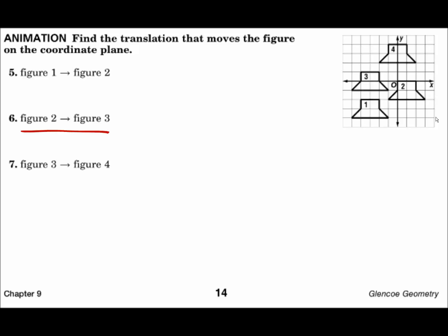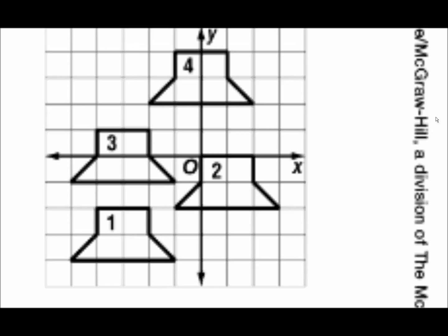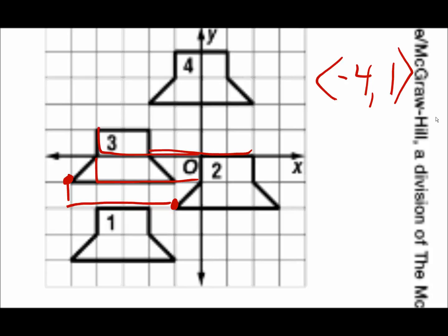From figure 2 to figure 3 — same job. Pick a point on figure 2 and move it to the corresponding point on figure 3. I'll choose the bottom left point. Go left or right first: I go 4 to the left, that's negative 4. Then I go up 1, that's positive 1. The component form is ⟨-4, 1⟩: negative 4 means move 4 to the left, positive 1 means go up 1.